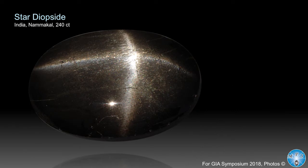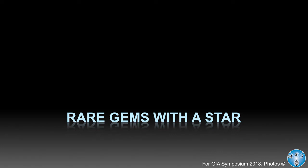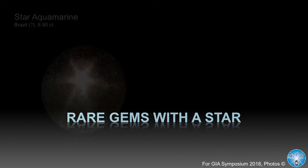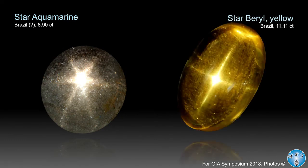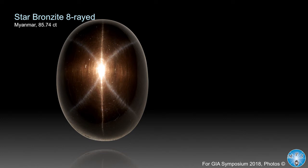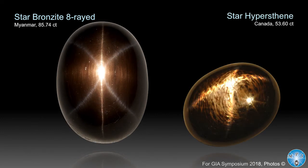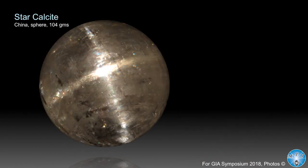Star diopside from South India — also sometimes green, pretty rare. Moving to the beryl varieties: star aquamarine and star beryl, mostly yellow, with the star caused by hollow channels. Star bronzite — I call it the star butterfly — has an eight-rayed star in two different colors. Star hypersthene from our neighbor country Canada: a lot of hypersthene on the market, but it's very difficult to get one with a decent star. Star calcite is a very funny stone — a sphere, very inexpensive material — and it can show a quite nice four- or eight-rayed star, with the ray angles at 90 degrees.